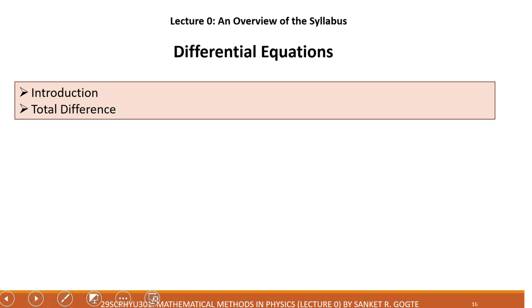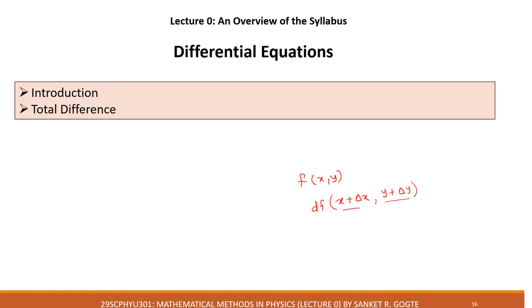Then we cover total differentials. Suppose we have a function of two variables and we change x by a small amount delta x and y by delta y. Since we are changing both variables, the function will also change at these two new coordinates. The total differential tells us how to find the change in a multivariable function using partial differentiation.